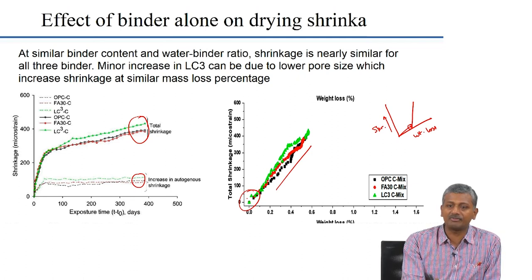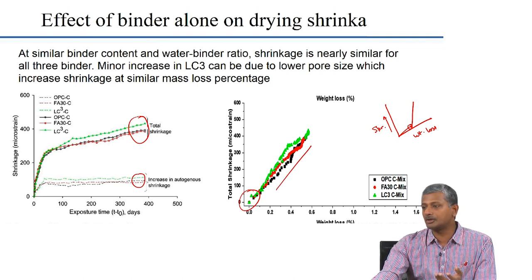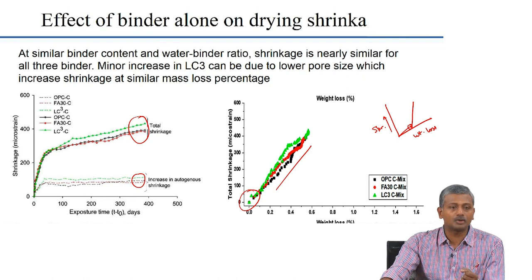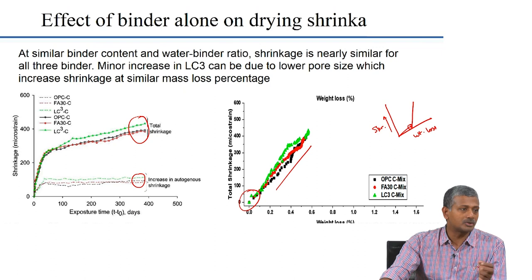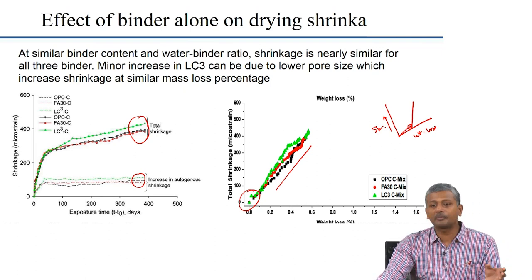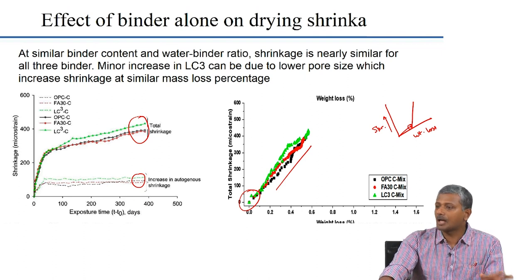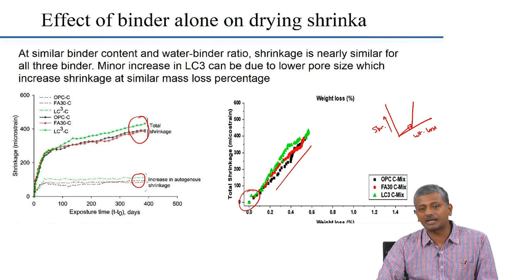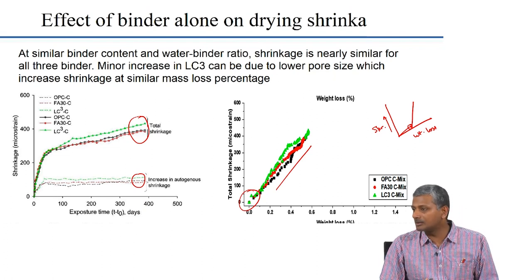Binder effects in drying shrinkage need to be worked out every time you do a concrete mix design. When you change the binder, you affect different characteristics: the paste volume changes because the replacement binder may have a different specific gravity, and paste is the component subjected to shrinkage, not the aggregate. Additionally, the characteristics of the paste, the interfacial transition zone, and the overall stiffness of the concrete all influence drying behaviour. Shrinkage prediction models are available, but there is often significant discrepancy between models, and experimental data usually matches only one or two of them.